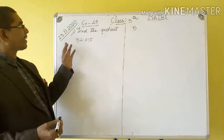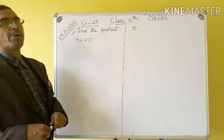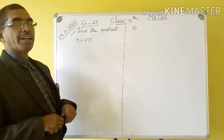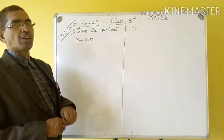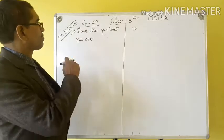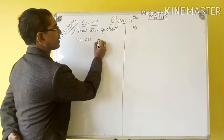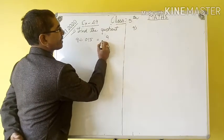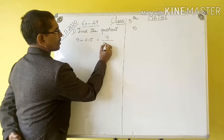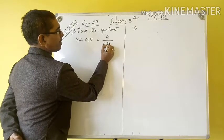First question: 9 divided by 0.15. Now we can write 9 divided by 0.15.